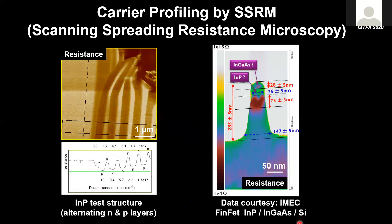Here's another example, kindly provided by IMEC in Belgium, where we use this technique to look at smaller, thinner structures and look at carrier concentration or diffusion within a fin at different positions. This type of image allows you to compare diffusion through the center of the interval versus the one at the edge. The resolution of this method can be as good as a single nanometer.